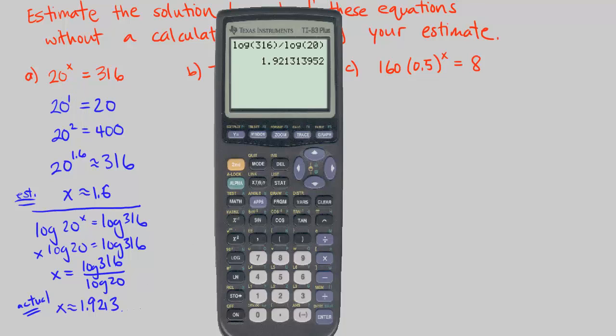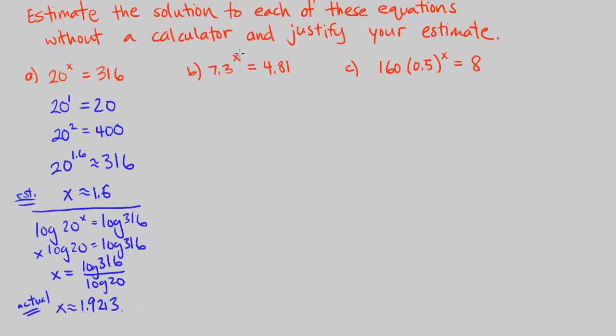Let's go on to part B. We have 7.3 to the power of x equals 4.81. Now, I know 7.3 to the power of 0 equals 1. 7.3 to the power of 1 equals 7.3. And I know this is somewhere in between. So my value for x is somewhere in between. Let's say it's approximately 0.6.